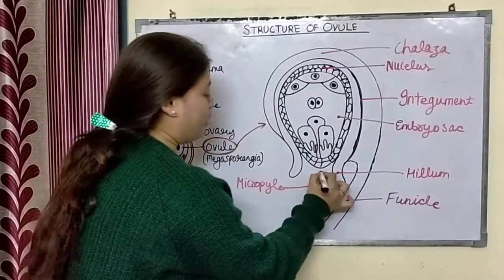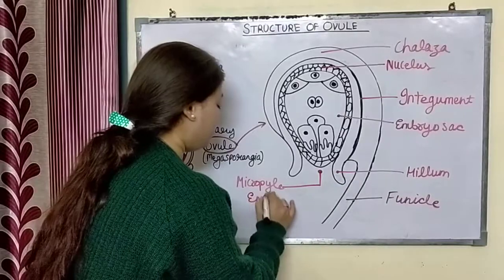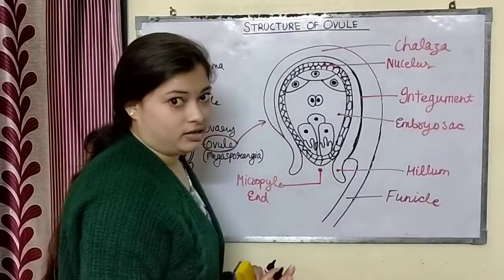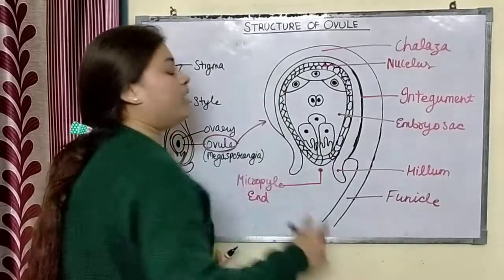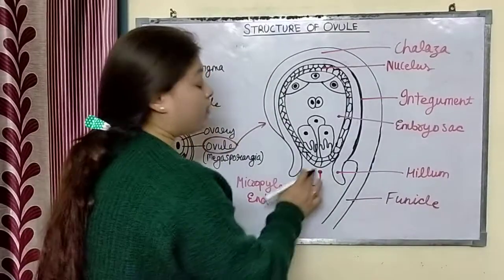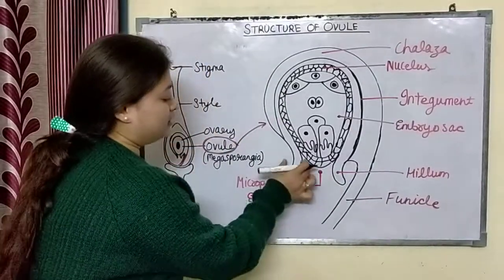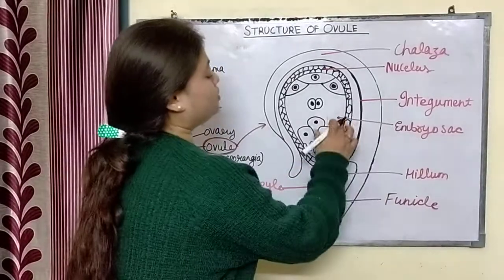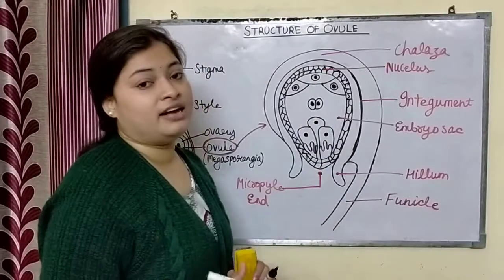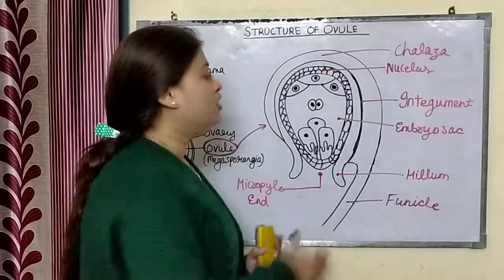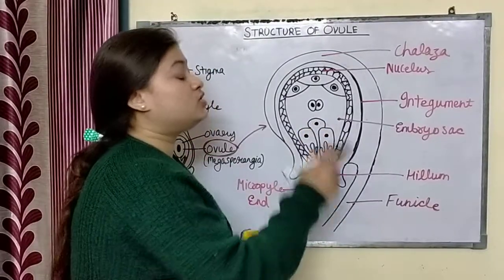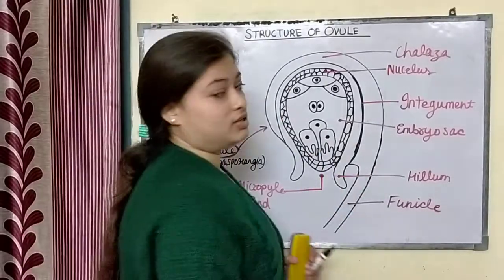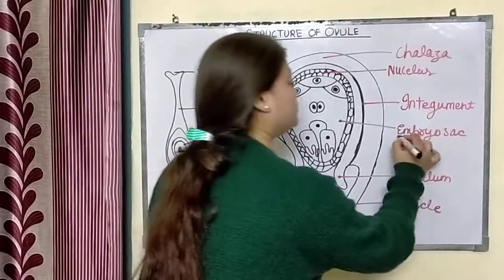Let me tell you again — the micropyle end is the opening where the pollen tube enters during fertilization. The funicle is the base. The embryo sac is the most delicate and innermost part of the ovule, and it plays a key role in double fertilization. Double fertilization occurs inside the embryo sac.